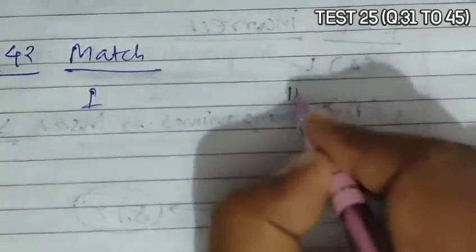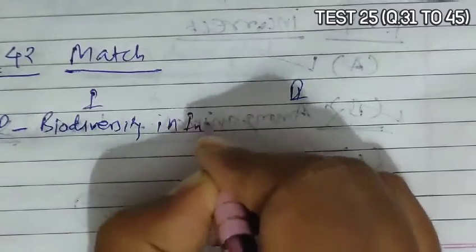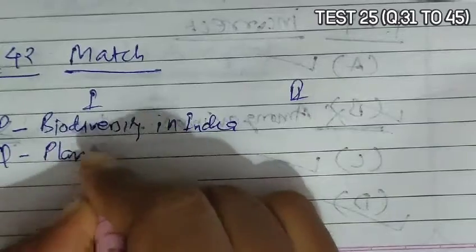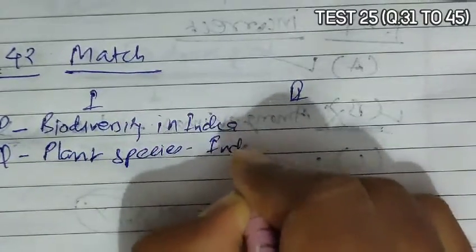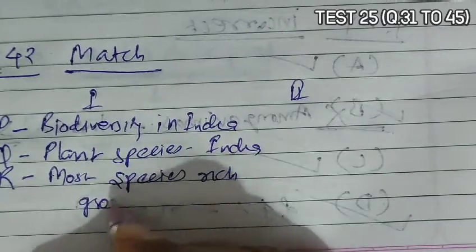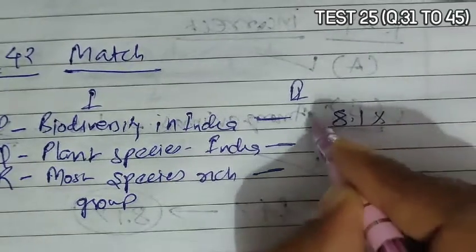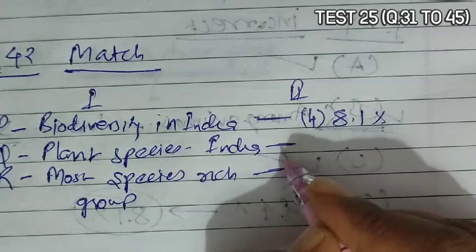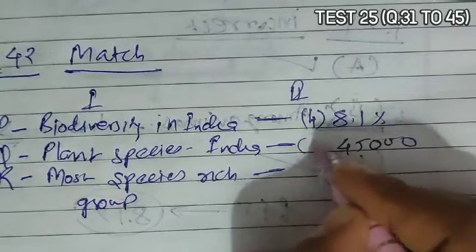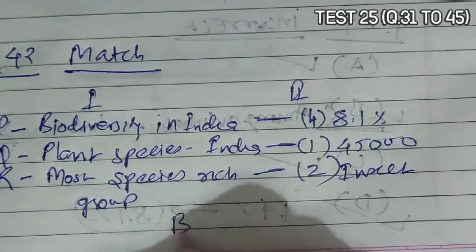Question 42 asks to match the following. Column 1 has P: Biodiversity in India, Q: Plant species in India, and R: Most species-rich group. Biodiversity in India accounts for 8.1% of the world's species, matching option four. Plant species in India are 45,000, matching option one. The most species-rich group is insects, matching option two. So according to this match, option B becomes the correct answer.